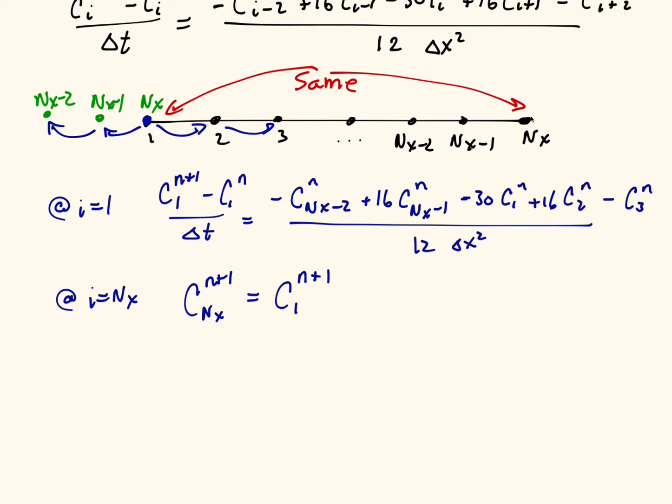Now if you wanted to write the discretization here, you could. There's no reason why you could not. You'd actually get exactly what we just wrote here. It would be exactly the same, because nx minus 1 is your neighbor to your left, nx minus 2 is the second neighbor to your left.